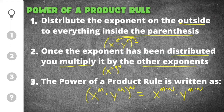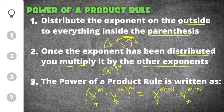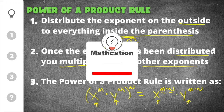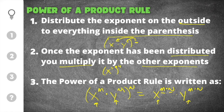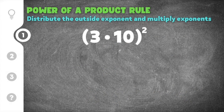So what that means is you will keep the bases the same — x and y stay the same — and then you multiply the exponents. Whatever m is gets multiplied times whatever n is for all bases inside of the parentheses. Don't forget to subscribe so you don't miss out on other helpful math videos. Let's get started on our first practice problem on power of a product rule.